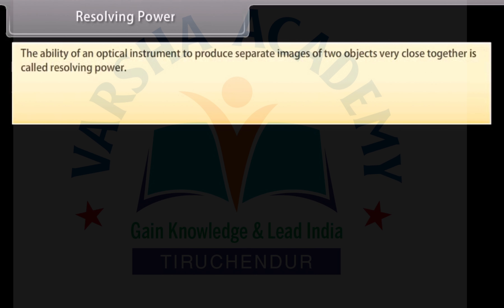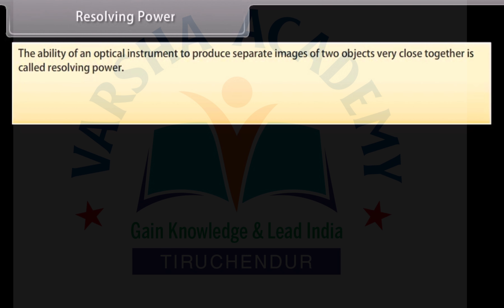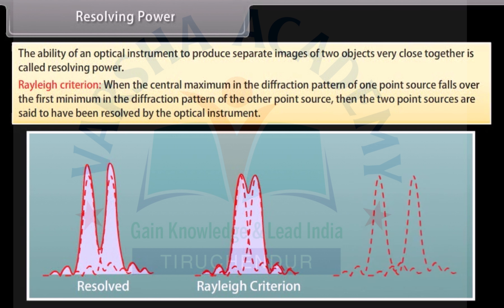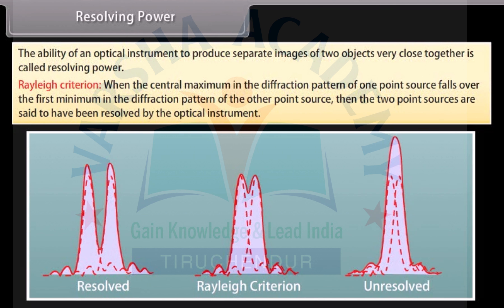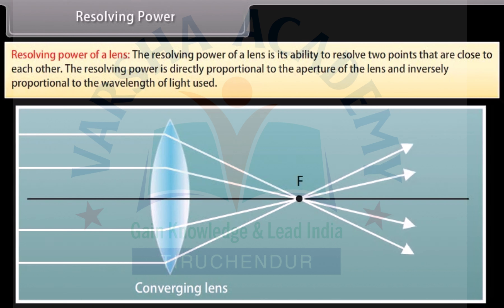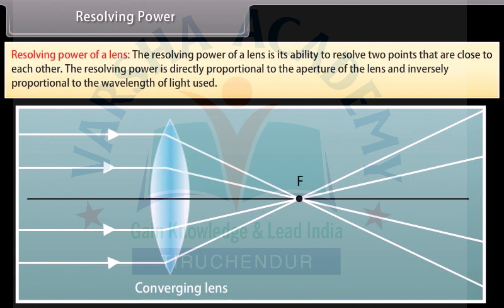Resolving power: The ability of an optical instrument to produce separate images of two objects very close together is called resolving power. Rayleigh criteria: When the central maximum in the diffraction pattern of one point source falls over the first minimum in the diffraction pattern of the other point source, then the two point sources are said to have been resolved by the optical instrument. The resolving power of a lens is its ability to resolve two points that are close to each other. It is directly proportional to the aperture of the lens and inversely proportional to the wavelength of light used.